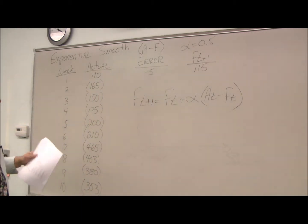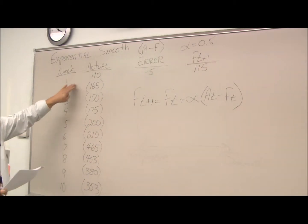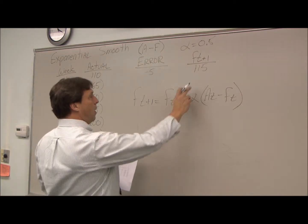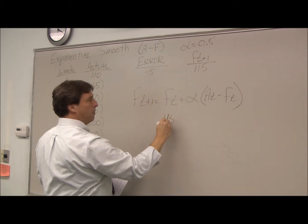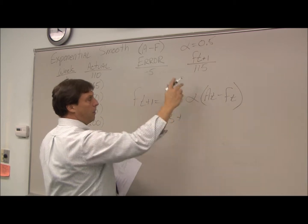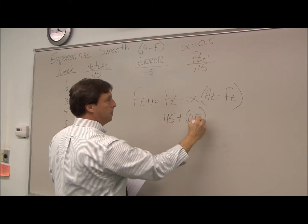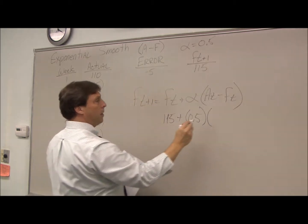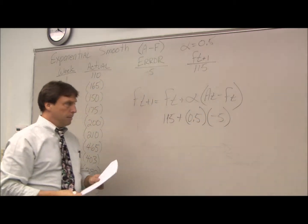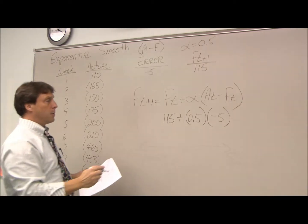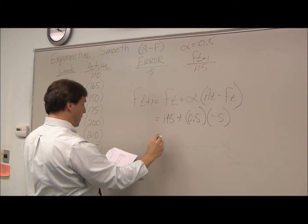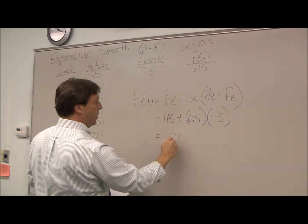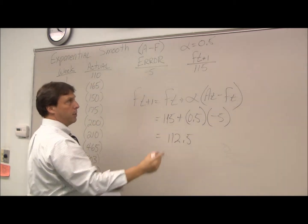All right, so we're in week 1, forecasting for week 2. We know our current forecast since we're in week 1 is 115. Our alpha is 0.5, and our error is negative 5. So really simply, my forecast for the second week is going to be 112.5, or the 115 minus 2 and a half.